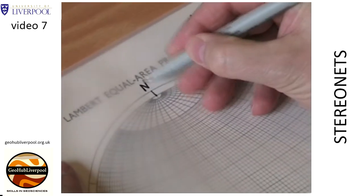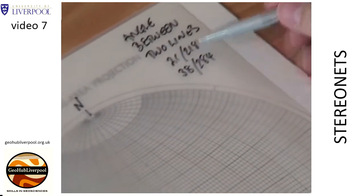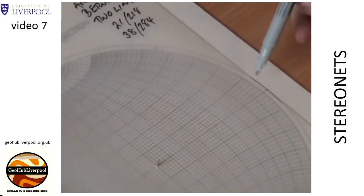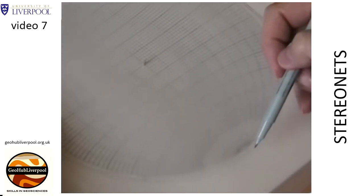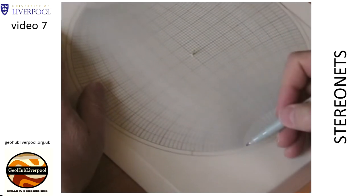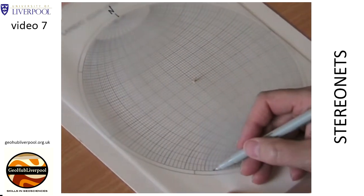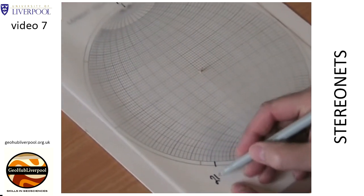Mark the pole on the tracing paper. Count 218 degrees around the primitive circle. Remember, the heavy lines are at 10 degrees and subdivisions are at 2 degrees. Mark this direction of plunge on the tracing paper.